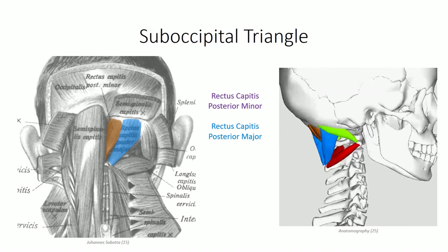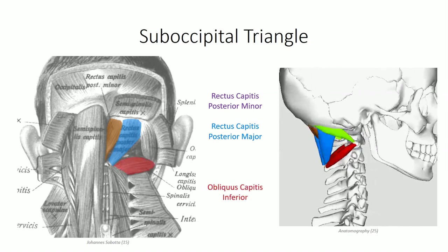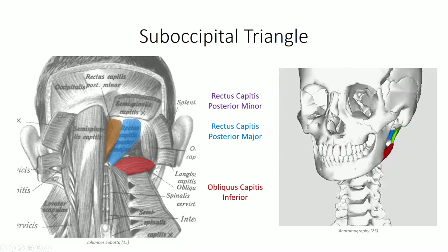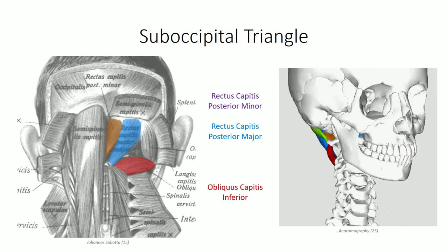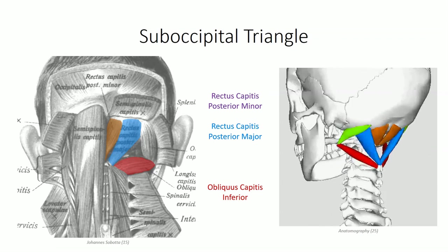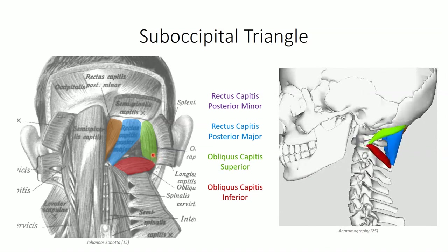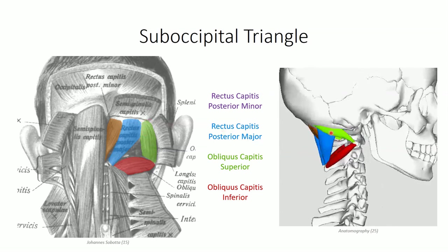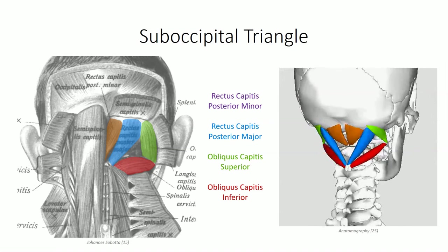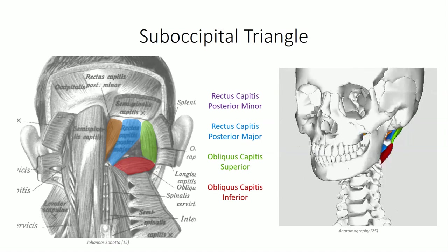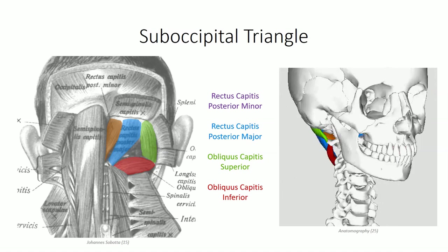Lateral to the rectus capitis muscles are the obliquus capitis muscles. The obliquus capitis inferior is something of a misnomer, seeing as the muscle does not attach to the occiput at all; it originates off the spinous processes of C2 and runs obliquely to insert on the transverse process of C1, rotating the atlas on the axis. Obliquus capitis superior originates from the transverse process of C1 to insert between the superior and inferior nuchal lines. Its specific function is unclear, possibly playing a role in proprioception, a function all the suboccipital muscles may share.